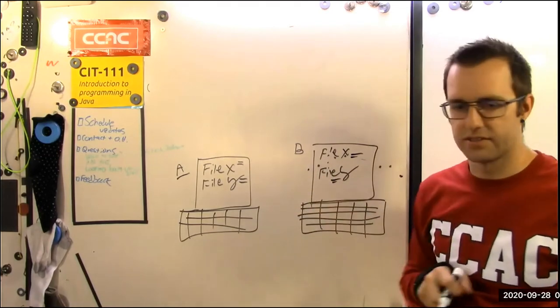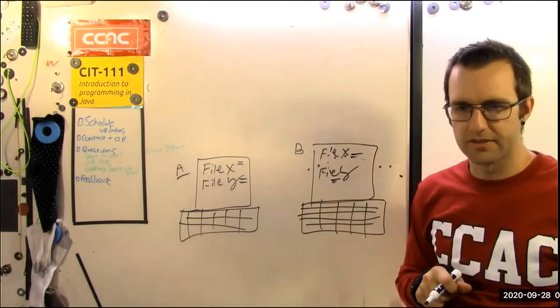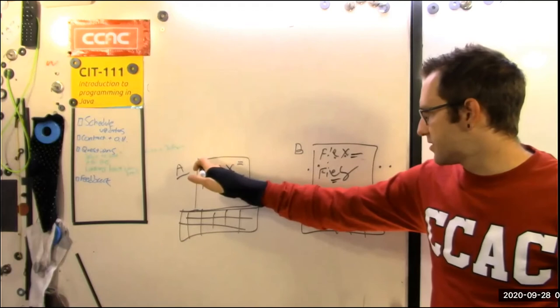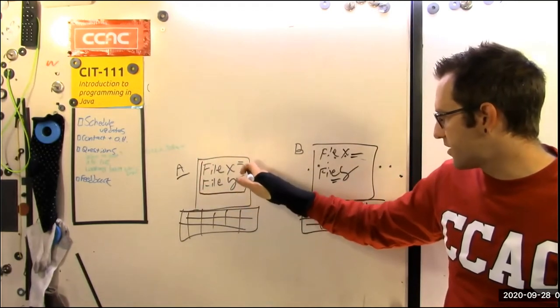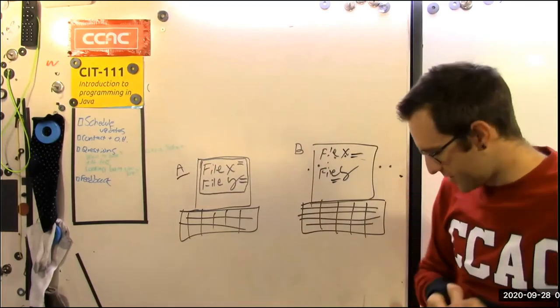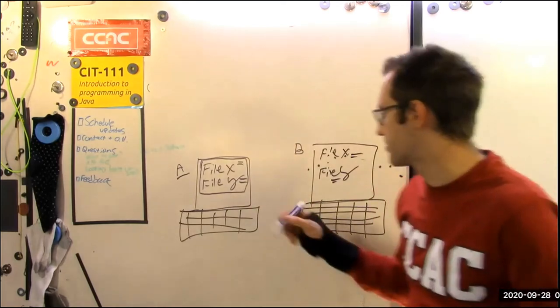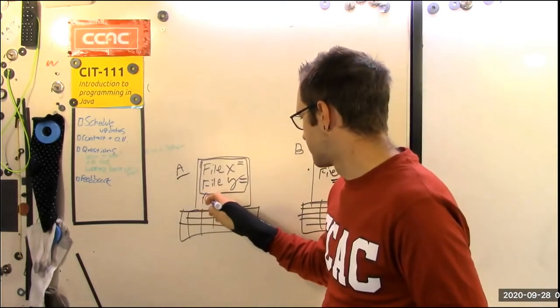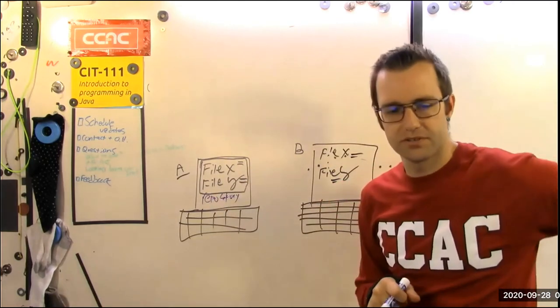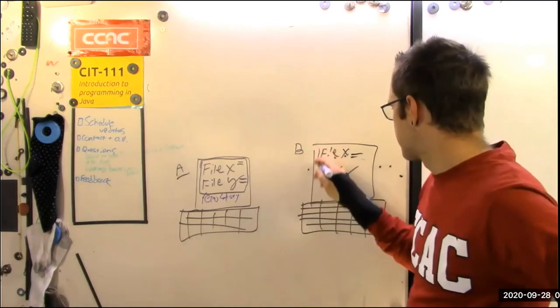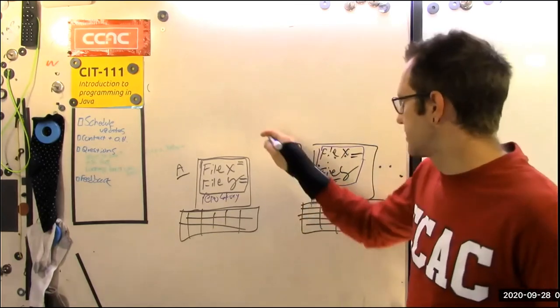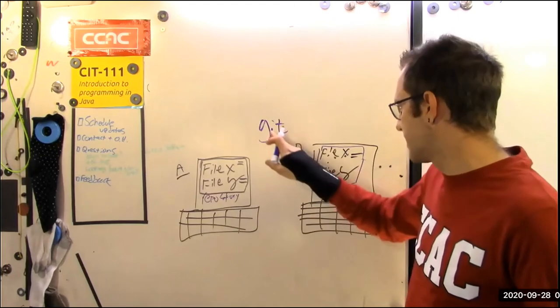What Git does is it says, okay, I'm going to let's group all the files in your system that are related to a project in a container called a repository or repo for short. So repository is just a special directory inside your computer that can be managed by a tool called Git. Not Git, but not get, but Git.